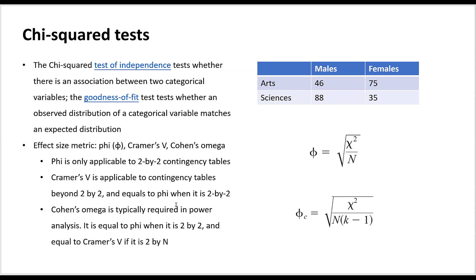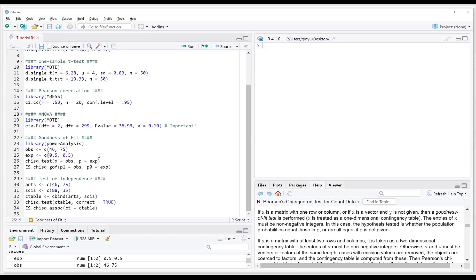Cramer's V equals phi when the table is a two-by-two one. Cohen's omega is typically required for power analysis, and it equals phi for a two-by-two table and equals Cramer's V if the smaller dimensional value of the table is two. Phi is calculated by taking the square root of the chi-square statistic divided by the total number of subjects. Cramer's V includes an additional term K, which refers to the smaller dimensional value of the contingency table — for a three-by-four table K equals three, and for a six-by-five table K equals five.